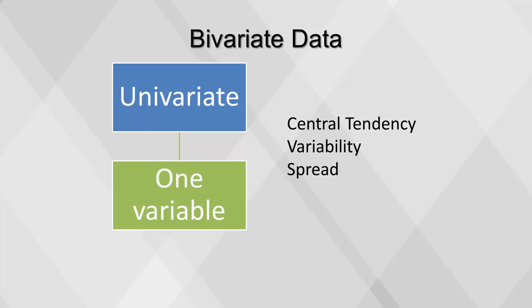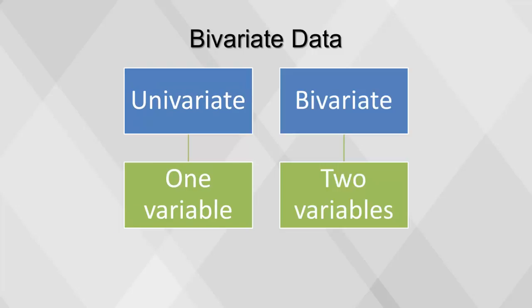Measures of central tendency, variability, and spread summarize a single variable by providing important information about its distribution. Often more than one variable is collected on each individual.